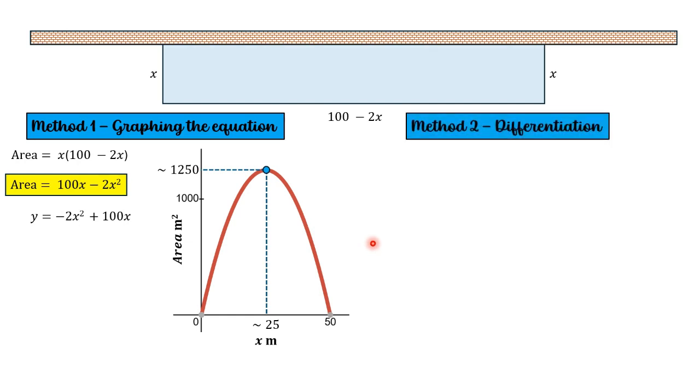So method two, this is going to be through differentiation, where we are going to find a gradient function for this line. Now the gradient function, also known as the derivative, just represents the slope of a function at any given point. It's a formula that provides the gradient of a curve at any value for x.